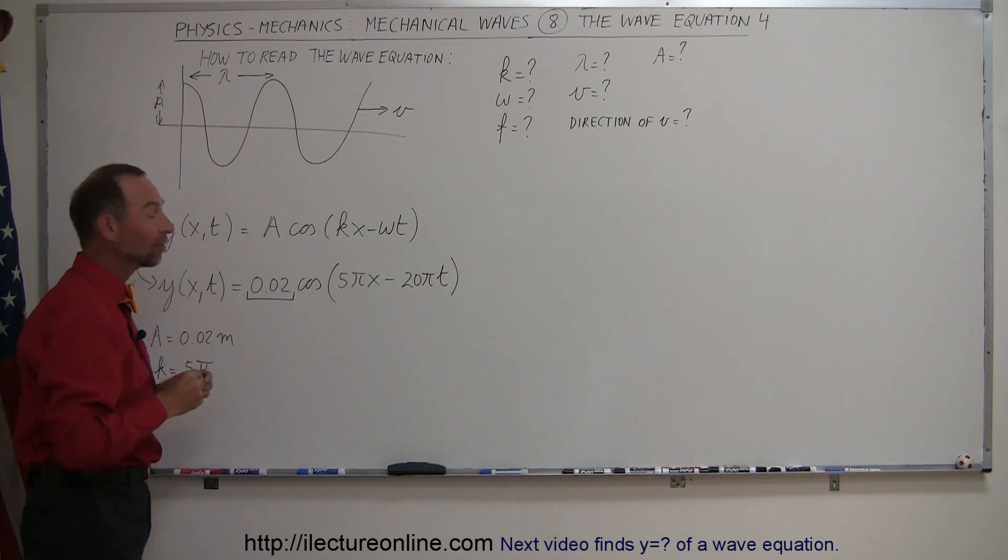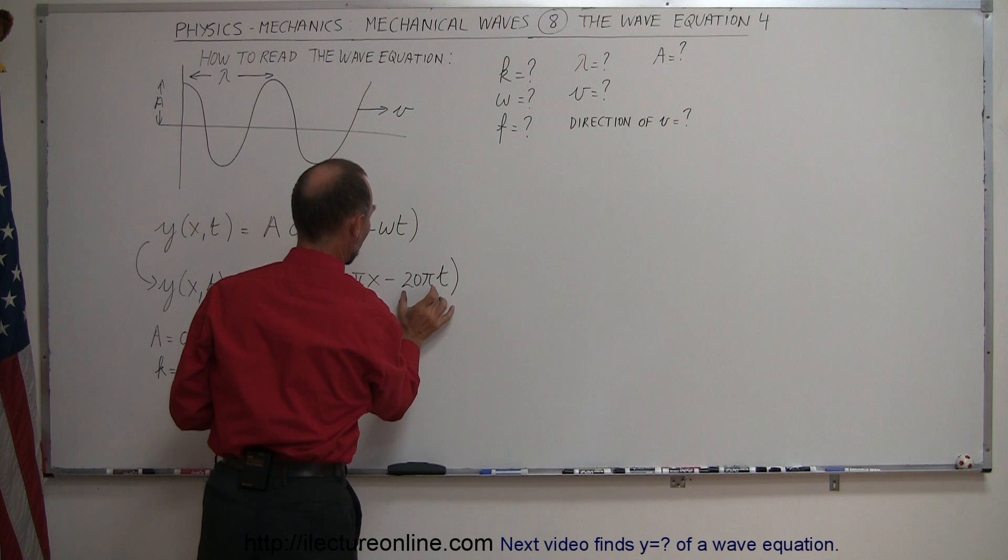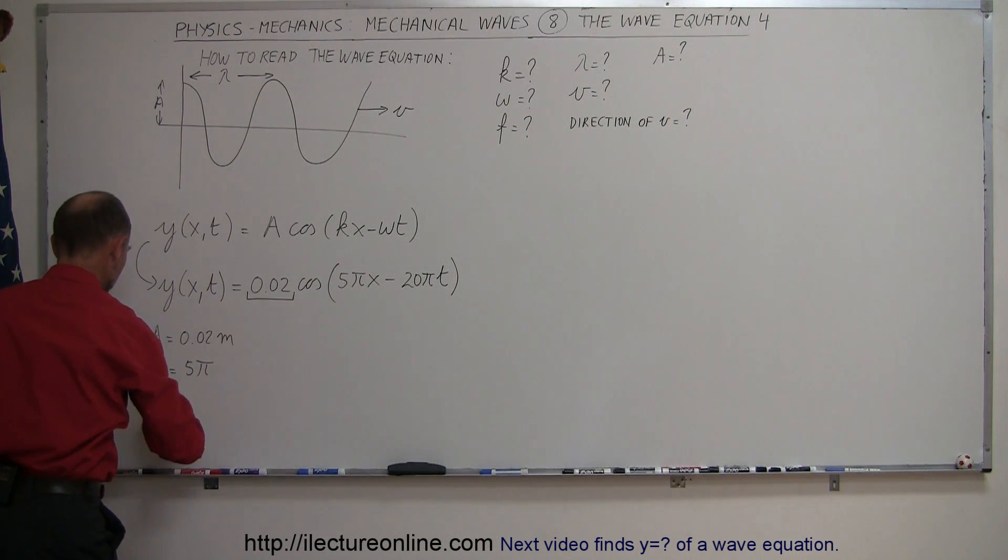And then the frequency, the angular frequency of oscillation, omega, that can be read right here, so we say that omega is equal to 20 pi.